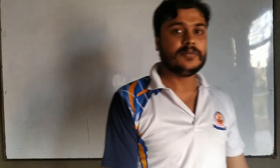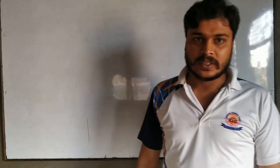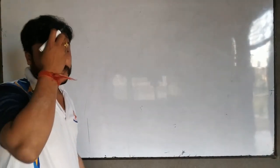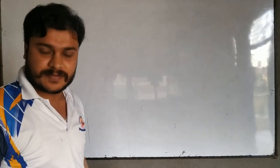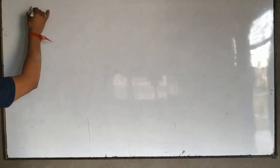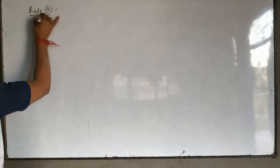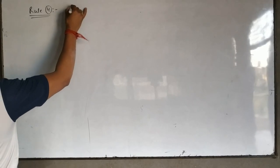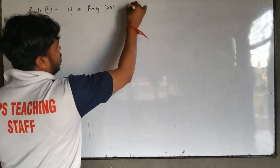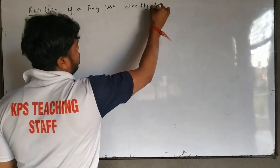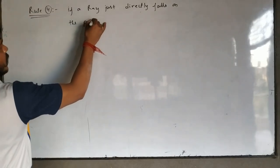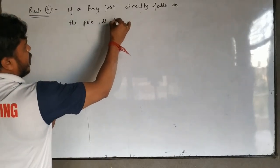Hello students, welcome to the third part of reflection. In the last part, we studied about the rules for image formation by the spherical mirror. Now we come to the next point, that is Rule 4. Rule 4 states: if a ray falls directly on the pole, it follows the laws of reflection.